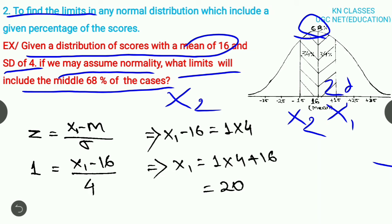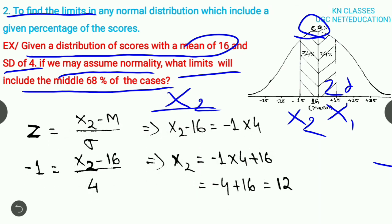Now we have to find out the value of X2. Similarly, by using the same process, use the formula of Z score. Z equals X minus mean divided by standard deviation. Here the Z value is on the negative side, so Z equals negative 1.